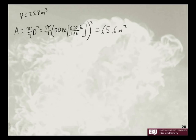Alright, so then our H is equal to volume divided by area, so that is 25.8 meters cubed divided by 65.6 meters squared, which is equal to 25.8 divided by 65.6, which is equal to 0.39 meters.